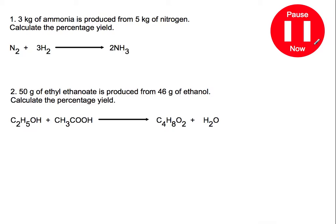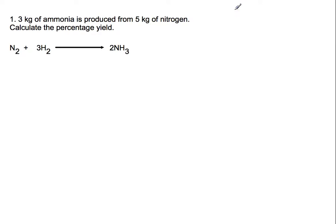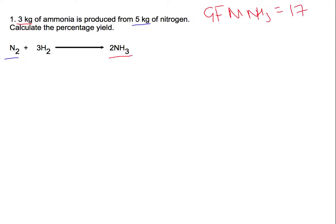Pause the video now and try these two examples. In this first example we're working in kilograms. If we just ignore the kilograms for now and work through as if it's in grams, we should end up with the same answer. So we pick out our actual and theoretical parts — our actual yield is 3 kilograms of ammonia, and we're going to use 5 kilograms of nitrogen to calculate the theoretical yield. We need to get the GFM of each: the GFM of ammonia is 17 and the GFM of nitrogen is 28.